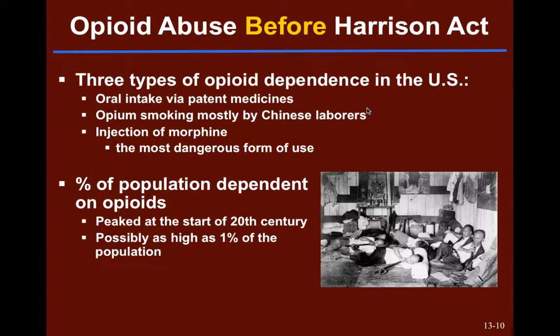Before the Harrison Act, we saw three different kinds of opioid use and dependence. We had those patent medicines — the ones you can make in your backyard with no real regulation, that can contain just about anything and be sold with claims of any kind of benefit. A lot of these included opium. We also saw smoking of opium, primarily by Chinese laborers, as depicted in the picture on the right-hand corner of the slide. And then injection of morphine, the more refined form injected directly into the body — the most dangerous form of use.